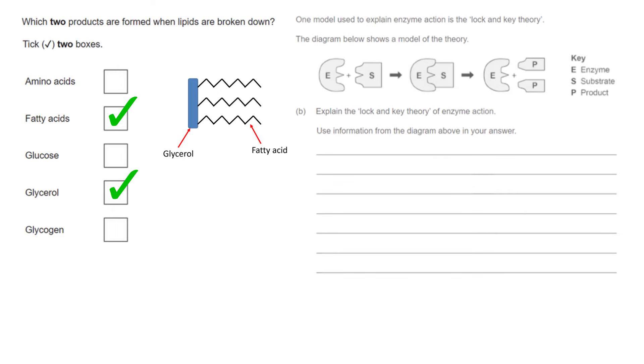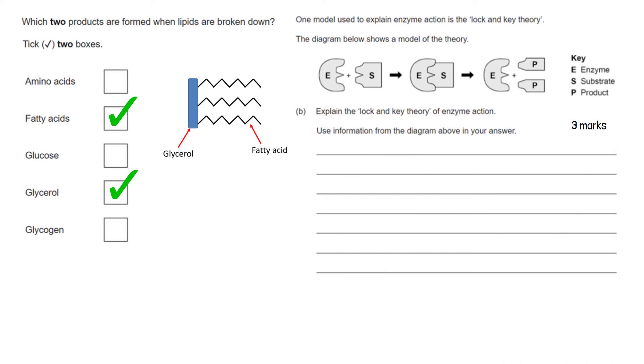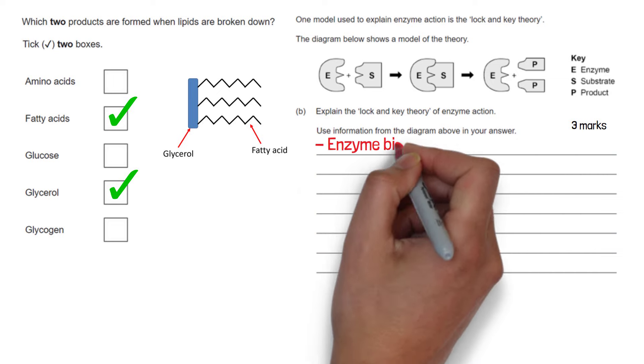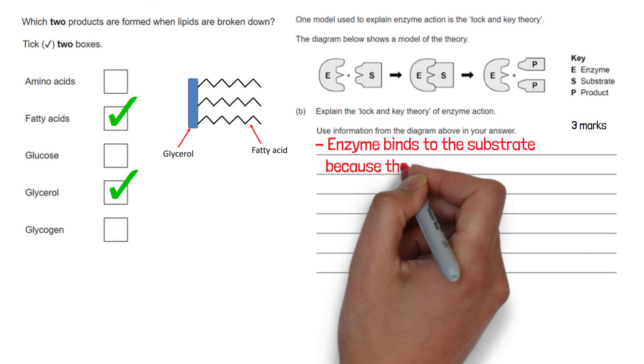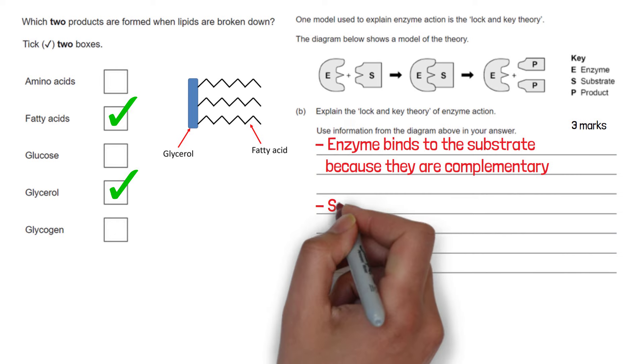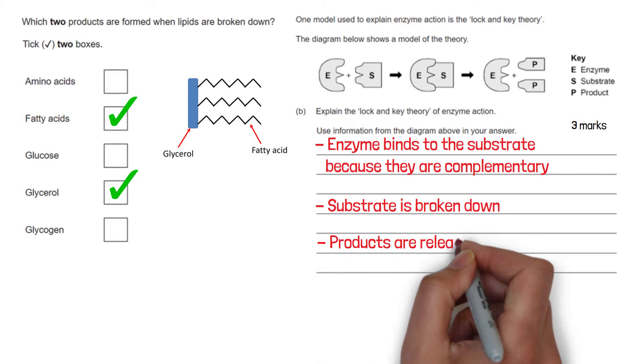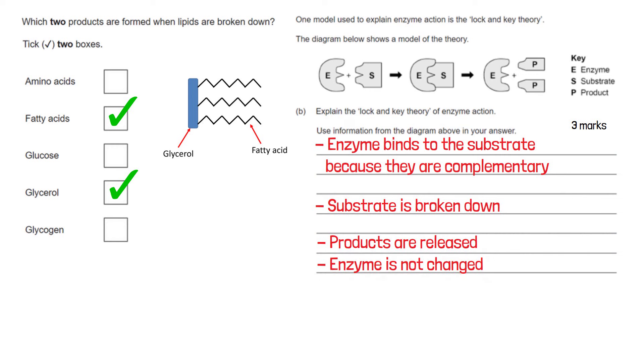The second question gives us the model of the lock and key theory and it says use information from the diagram above to explain the lock and key theory of enzyme action. So let's start from the very beginning. The enzyme binds to the substrate and this can only happen if the enzymes active site is complementary. The substrate is then broken down. Once broken down the products are then released and the enzyme remains unchanged. It doesn't get used up. So you can have either of those four bullet points.